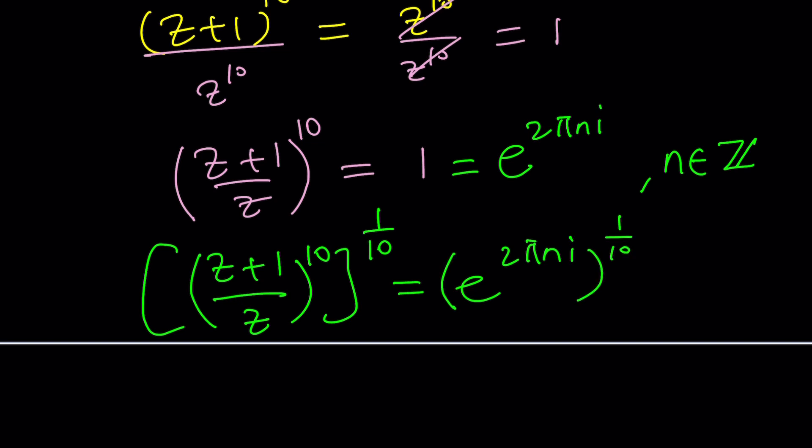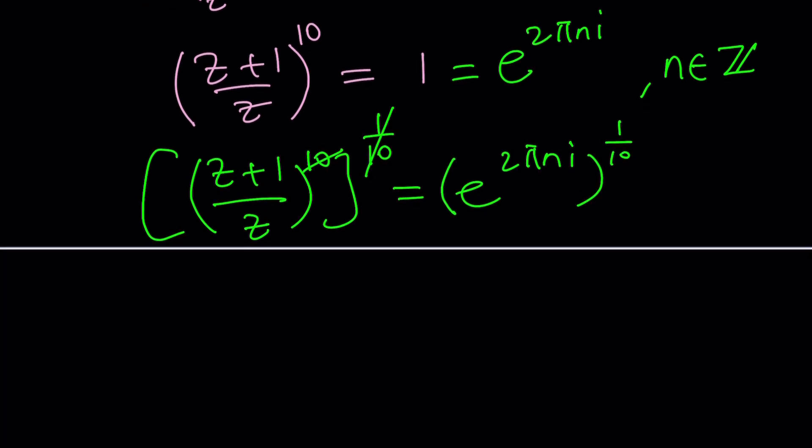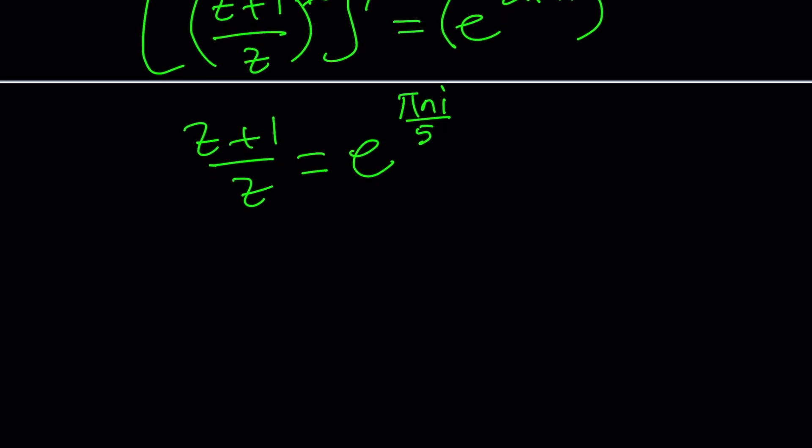Great. Now, from here, the 10 and the 1 10th cancel out. And then we get z plus 1 over z equals e to the power 2 pi n i times 1 10th. That's going to be pi n i divided by 5. Again, remember, n is an integer. Now, at this point, you might do a couple different things. Try to solve for z, right? That should be too hard.